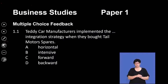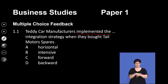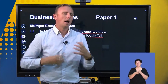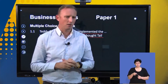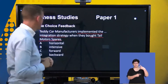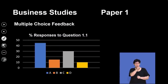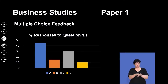First question: Teddy Car Manufacturers implemented the following integration strategy when they bought Tail Motor Spares. So they're a car manufacturer and now they're buying a motor spares business. The four options are: horizontal integration, intensive integration, forward integration, or backward integration. Looking at your answers, the vast majority of you went for horizontal integration, a few went for intensive, a fair amount went for forward, and a small group went for backward.